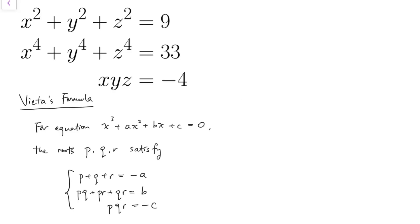I'm going to use Vieta's formula to solve this problem, focusing on the case of monic cubic equations. Monic means that the coefficient of the cube term is 1, and of course cubic means the degree is 3. The roots P, Q, R satisfy the relation that the sum equals minus a, the sum of the mutual products equals b, and the product of the 3 roots equals minus c.